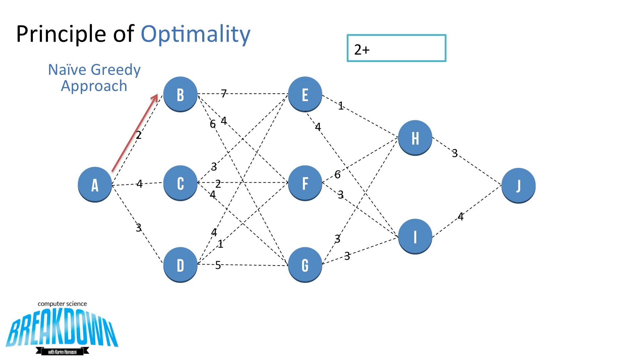Now, at node B, we're going to want to go to node F with a cost of 4. Then from F, we're going to pick between 6 and 3, and we're going to pick 3 to get to node I. And from I, we're going to go to J with a cost of 4, giving us a total path cost of 13.